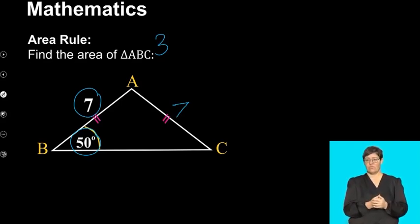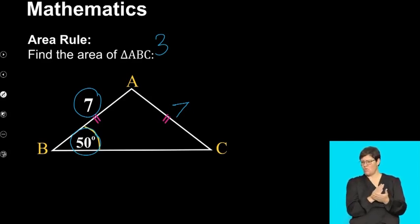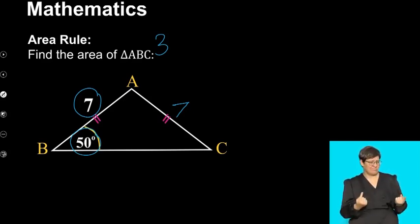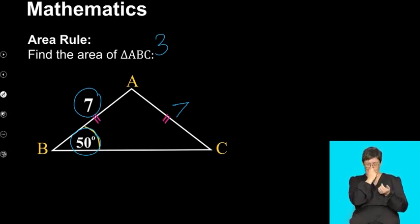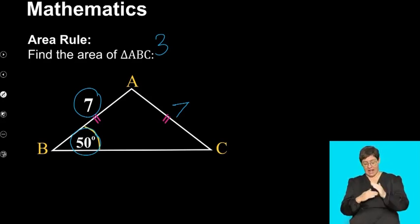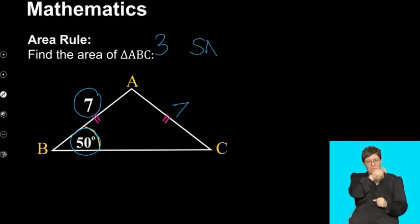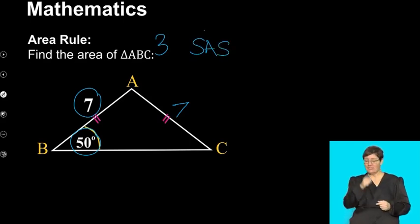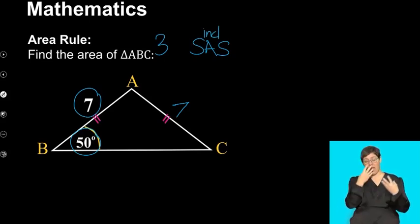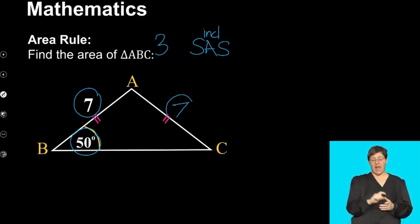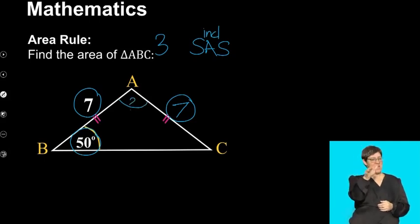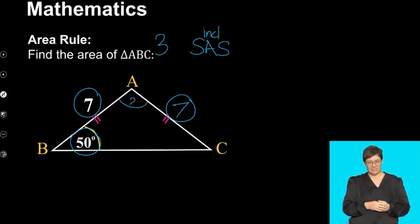So this is obviously an isosceles triangle. But we're not sure if we can use area rule yet. Because what are the requirements for area rule? For area rule, we need to be given side, angle, side — and remember, we need to be given the included angle. Now, we've got one side and we've got another side, but we do not have this angle. So our first problem is: do we have side, angle, side? No.